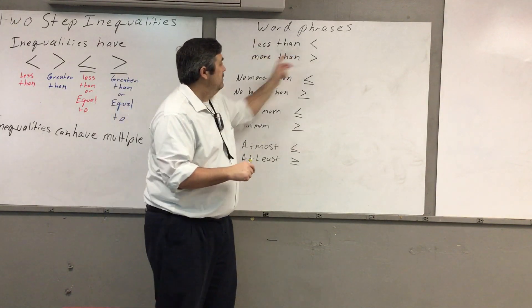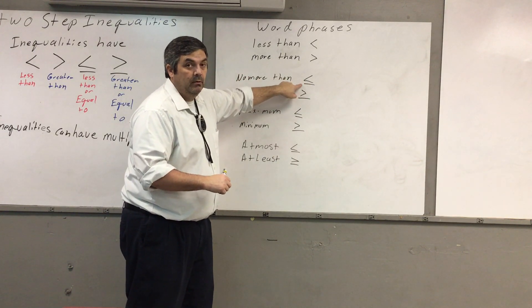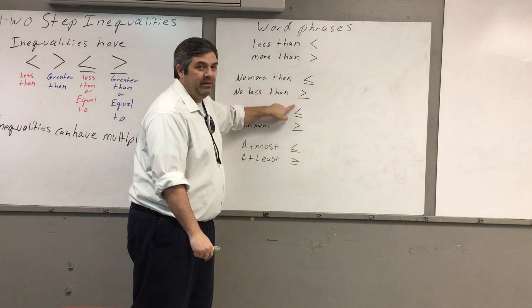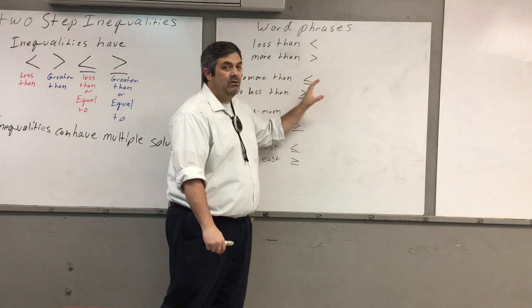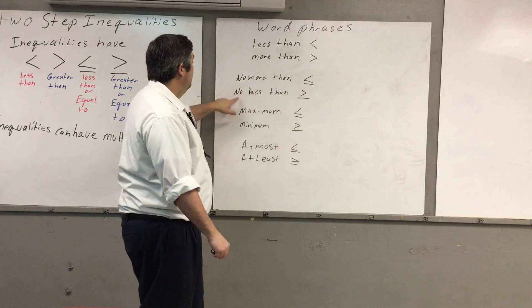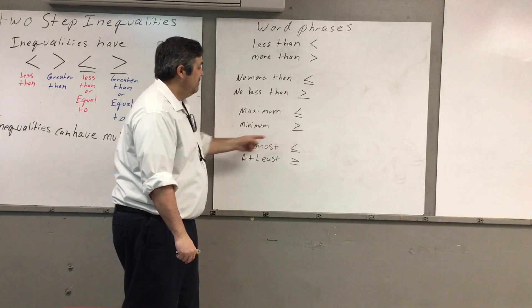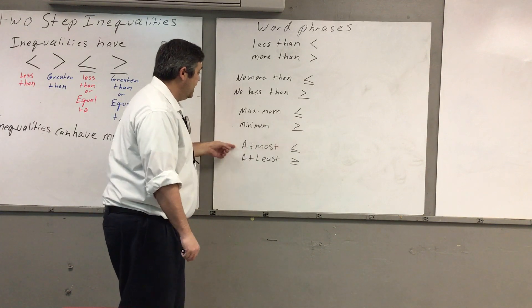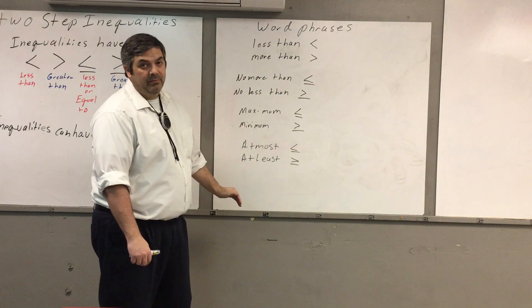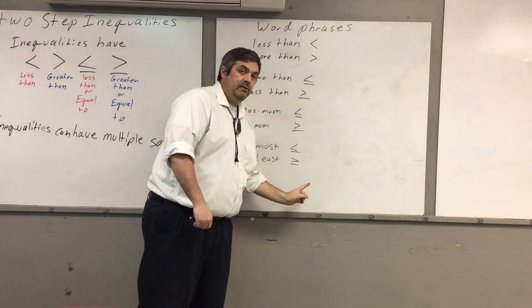Word phrases: 'less than,' 'more than,' and 'no more than.' No more than is less than or equal to — this is a key point. No less than is greater than or equal to, so you've got to be paying attention. Maximum means less than or equal to; minimum means greater than or equal to. Watch 'at most' and 'at least' carefully too.